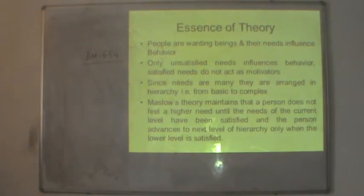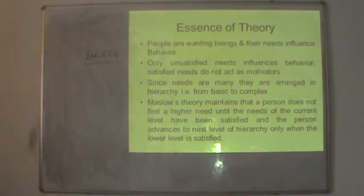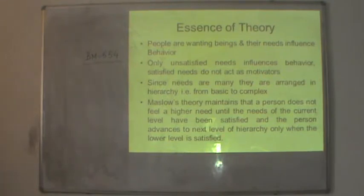Since needs are many, they are arranged in a hierarchy from basic to complex. Maslow's pyramid presents a hierarchy of five sets of needs ranging from bottom to top, also from basic to complex. Maslow's theory maintains that a person does not feel a higher need until the needs of the current level have been satisfied, and the person advances to the next level only when the lower level is satisfied.